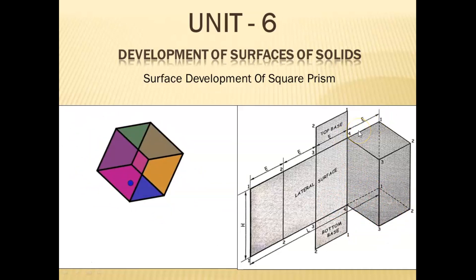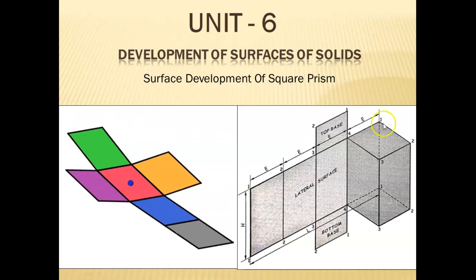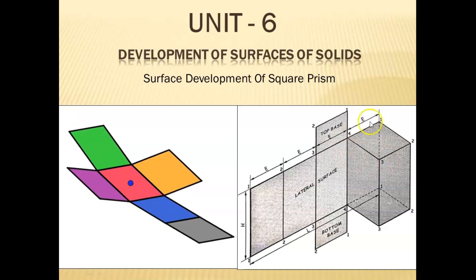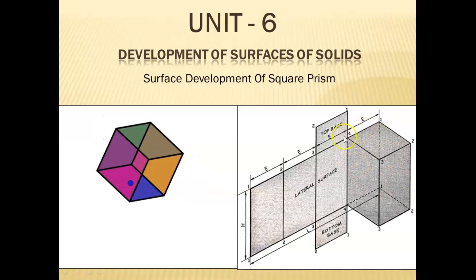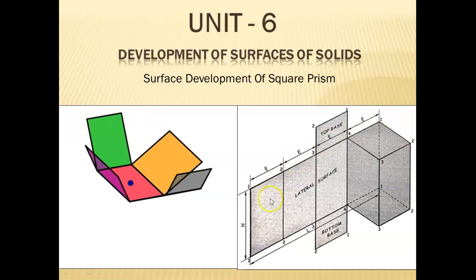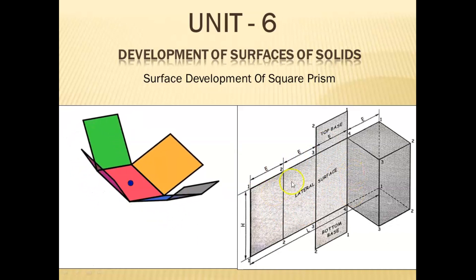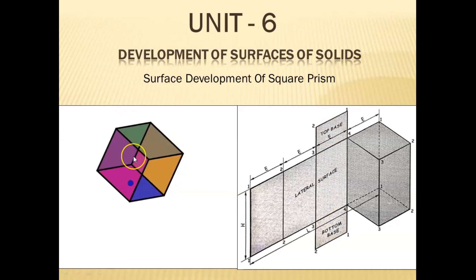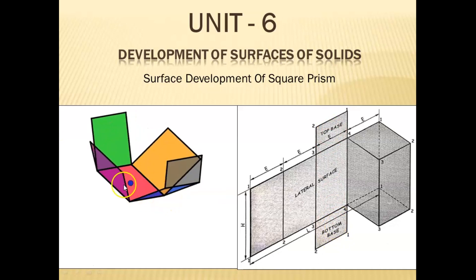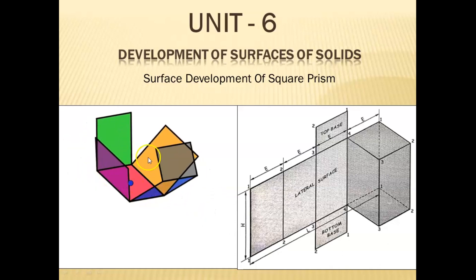If the prism is rolled for one complete revolution, then it moves a distance equal to the perimeter of the base polygon, which is a square here. When you rotate the square for one complete rotation, it has four rectangular surfaces — so four times e. In case of a square prism, you will find four rectangular faces in the development of lateral surfaces. As per syllabus, we are not considering the top and bottom base.